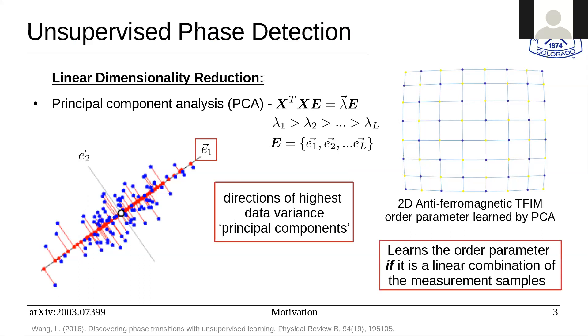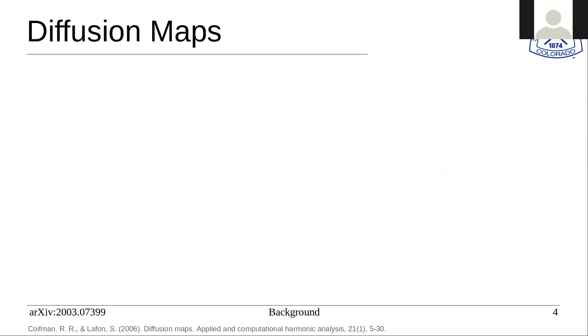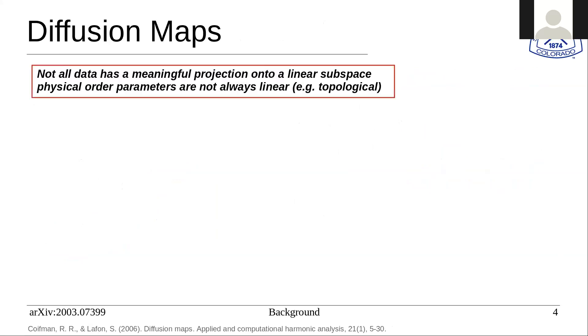It learns this order parameter if and only if it's a linear combination of the measurement samples. For more complicated models than transverse field Ising model, in particular very complex systems in complex quantum matter that we don't understand a priori, it's often difficult for order parameters to be linear in the measurement samples. Examples of states in complex matter that are difficult to use linear order parameters on are topological valence bond states, many body localized states, and other such models.